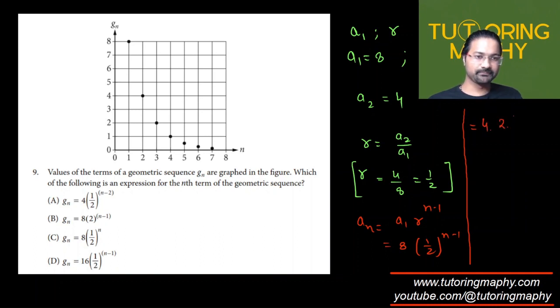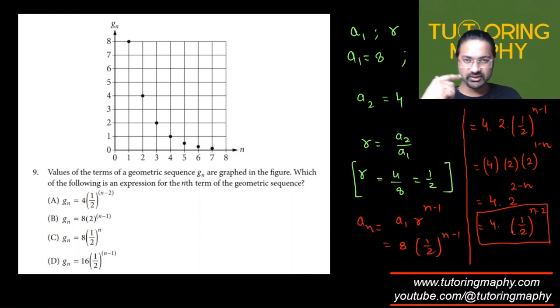So it will be 4 times 2 times 1 over 2 raised to n minus 1, which can be written as 4 times 2 raised to 1 minus n. The powers are swapped. This will become 4 times 2 raised to 2 minus n because the powers are being added now. And this can now be written as 4 times 1 over 2 raised to n minus 2, because as per the rules of exponents we take the reciprocal of it and the power is just negative now.